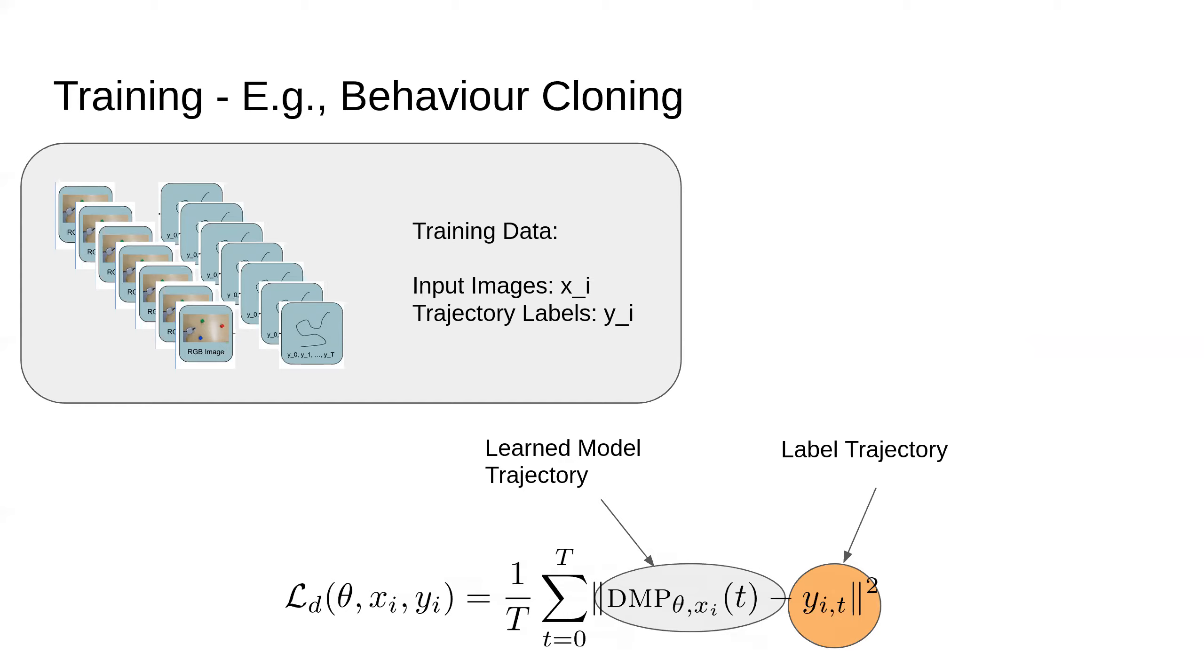Now we've got a supervised learning problem: given a starting configuration of the table, what's the trajectory I need to accomplish the task? That's a very simple method for learning from demonstration, behavior cloning, which is a supervised way of doing it. You've got training data with input images and trajectory labels. This is basically just a mean squared error: what's my learned trajectory, what's the actual label trajectory, minimize that distance. This is the simplest thing you think of for cloning behavior.